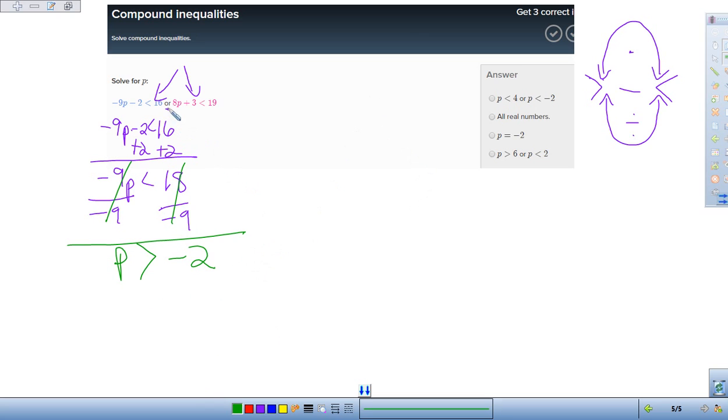And then I have all of that just is for this first equation. So then I have a big OR statement. And now I'm going to work on this other problem, 8P plus 3, or the other part of this problem, less than 19.